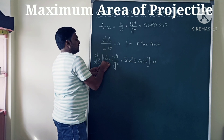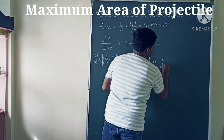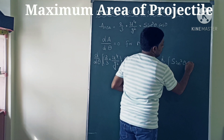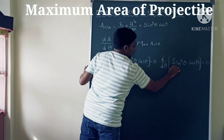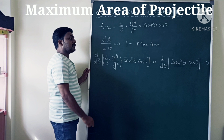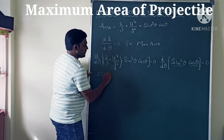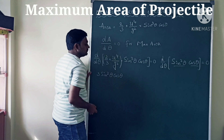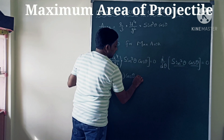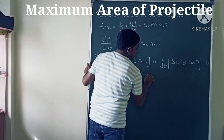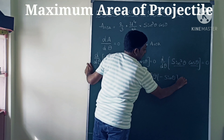With respect to theta, the constant part goes to the other side — zero divided by anything is zero — so we need d/dθ of sin³θ · cosθ = 0. Applying the UV (product rule) method: the derivative of sin³θ is 3sin²θ · cosθ, and the derivative of cosθ is −sinθ. So we get: 3sin²θ · cos²θ + sin³θ · (−sinθ) = 0.